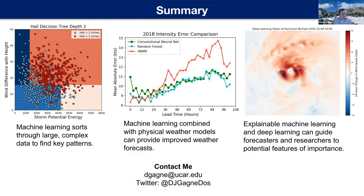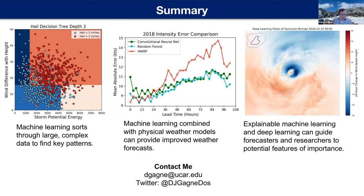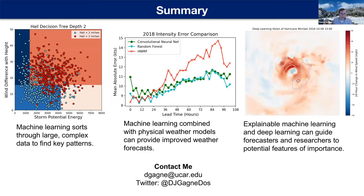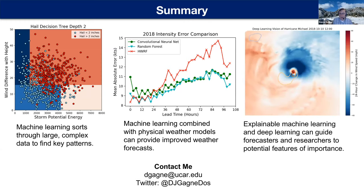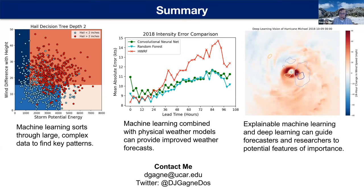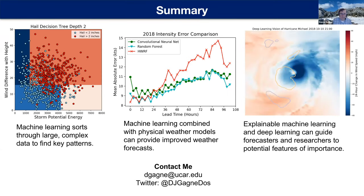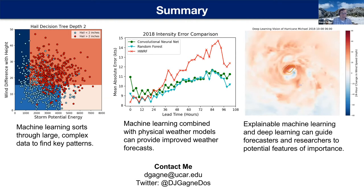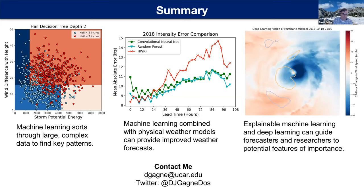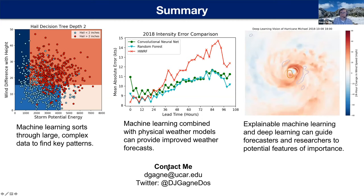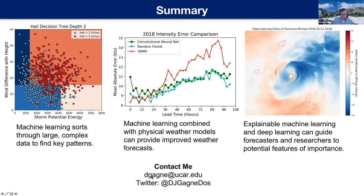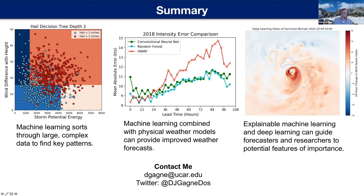Finally, in the example of Hurricane Michael — which hit the Florida panhandle as a Category 5 back in 2018 — the contours show where the neural network is focusing its attention in trying to predict increasing or decreasing intensity. It's looking at the wind field as it evolves, and the different contours highlight the areas — most of them in the core of the storm, where scientists would expect the most important information, but occasionally also looking at the outer regions of the storm, which may hint at some other factor to further investigate. In summary, machine learning sorts through large complex data to find key patterns. Combining it with physical weather models, we can improve forecasts and provide better guidance to forecasters and use explainable machine learning to guide researchers to potential features of importance.